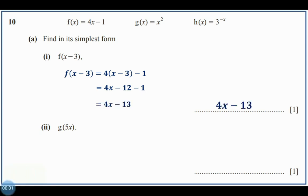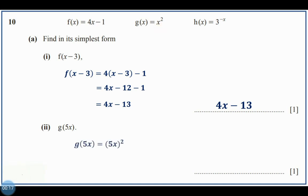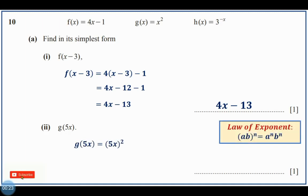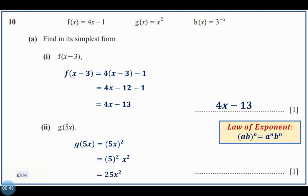Now let's move on to part 2: g(5x). I will look at G and change that x with 5x, putting it in brackets: (5x) to the power of 2. Remember the law of exponents — (A times B) raised to a power equals A to the power of n times B to the power of n. Therefore, this becomes 5 squared times x squared. 5 squared is 25, so our answer is 25x squared.